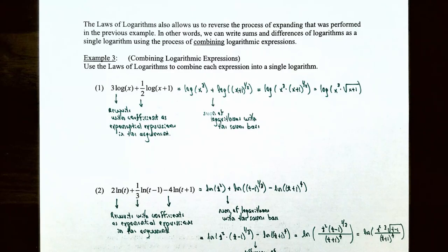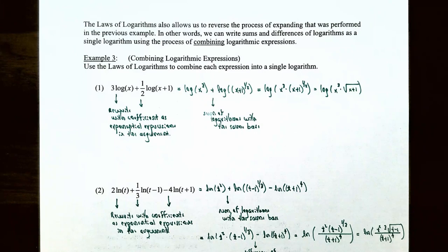The laws of logarithms also allow us to reverse the process of expanding. We can write sums and differences of logarithms as a single logarithm — this is called combining logarithmic expressions. In example three, we'll use the product rule, the quotient rule, and the power rule to combine each expression into a single logarithm.